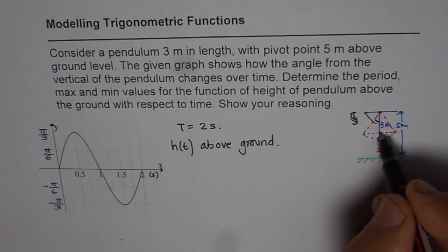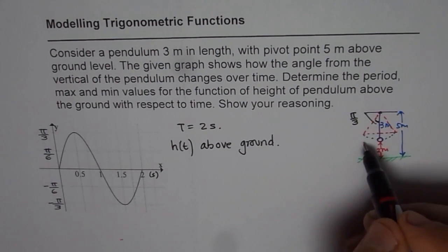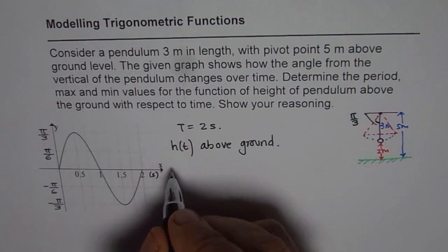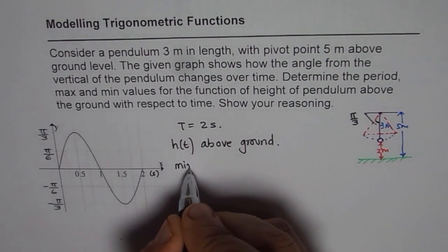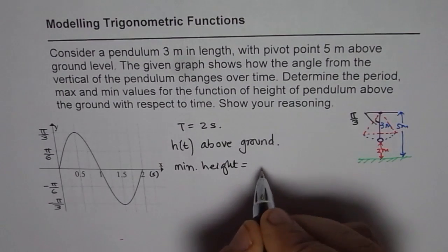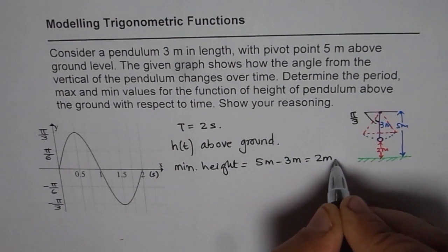And the maximum height will be when the pendulum is making an angle of pi by three. So that is going to be the maximum height. So minimum height we can easily write and say minimum height is two meters. That is five meters minus three meters, which is two meters.